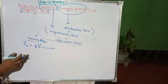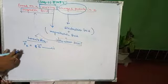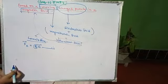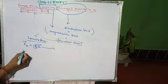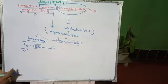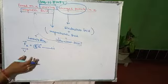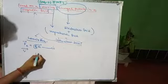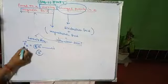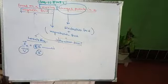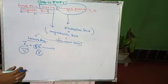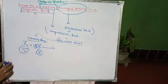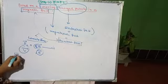Now if we allow this charge to move with a constant velocity v vector in the presence of a magnetic field B vector, then experimentally we have the following observations.